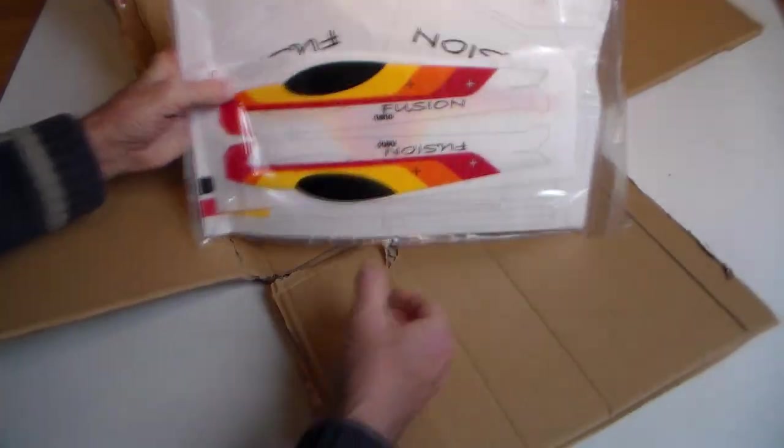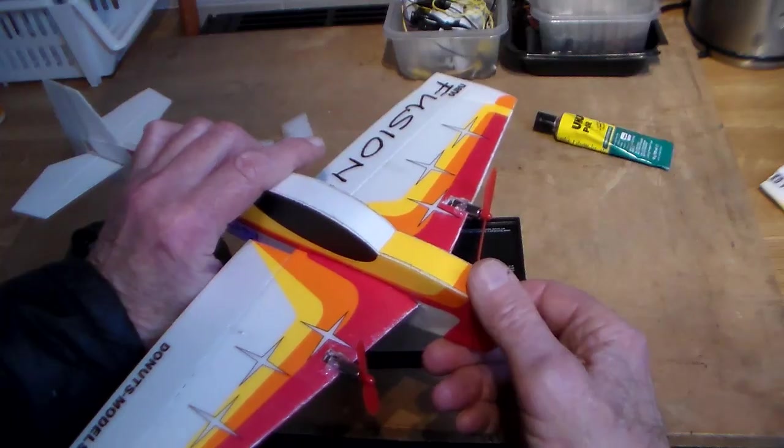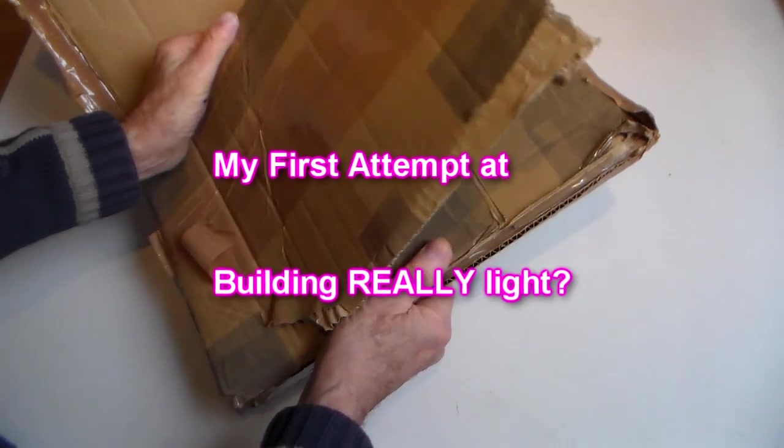Hi there, maybe I should have called this video 'Going Light'. In this video I show you how I turned seven grams of Depron into an RC flyable model. Let's get started.